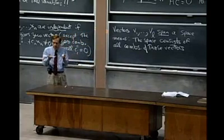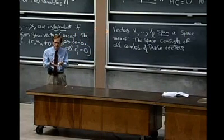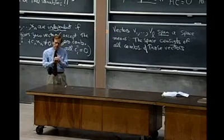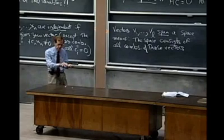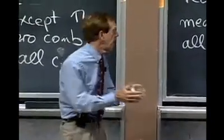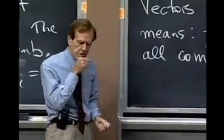that space S will be the smallest space with those vectors in it, right? Because any space with those vectors in it must have all the combinations of those vectors in it.